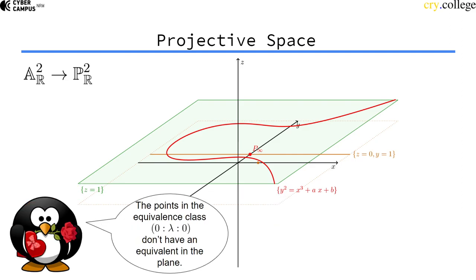So this equivalence class of points (0, something, 0) doesn't have an equivalent on the plane because it never crosses the plane.